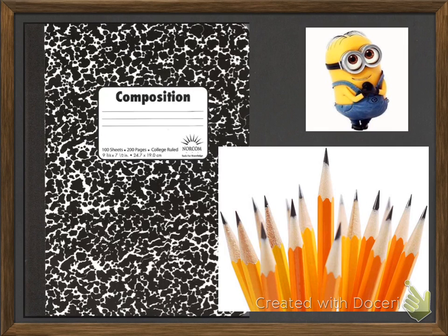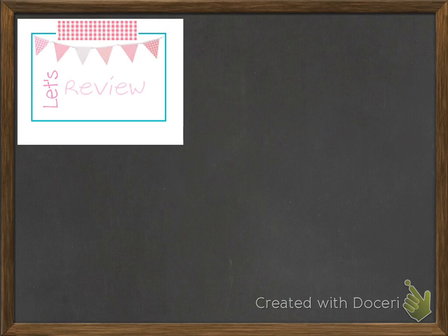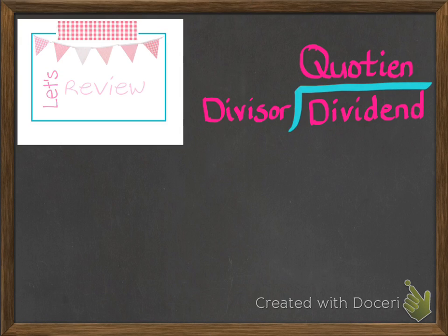You want to make sure you have your composition notebook, a sharpened pencil please. The first thing we're going to do is review. You have had this in previous division lessons, but I want to make sure that we're really clear because throughout this lesson you're going to hear me refer to terminology that you need to understand.